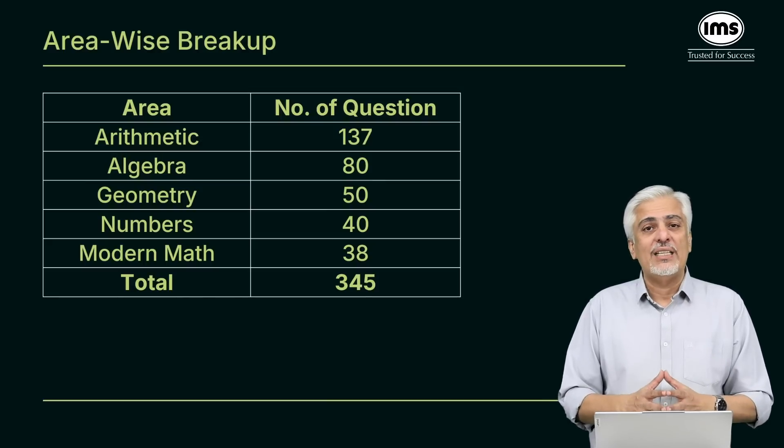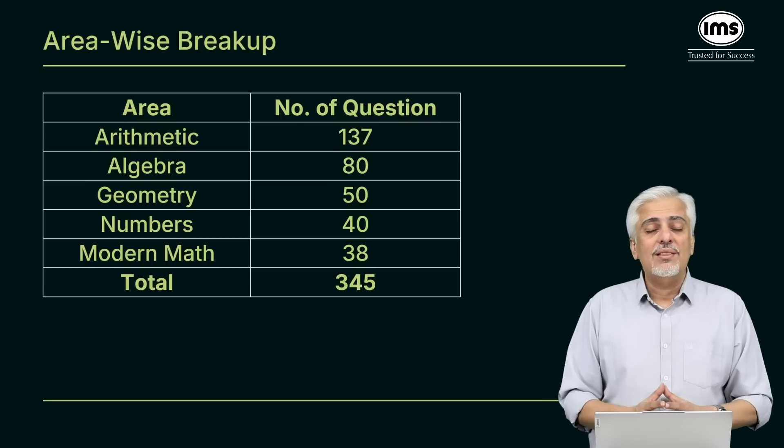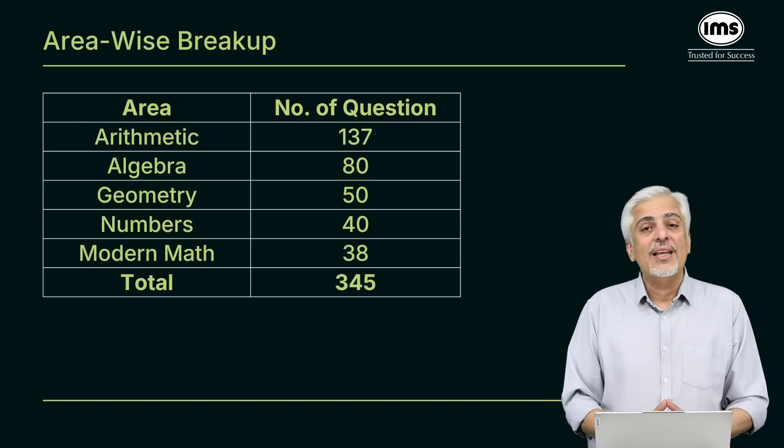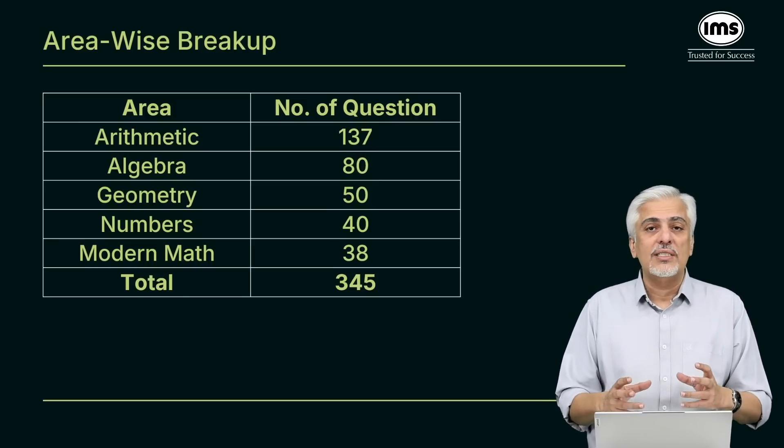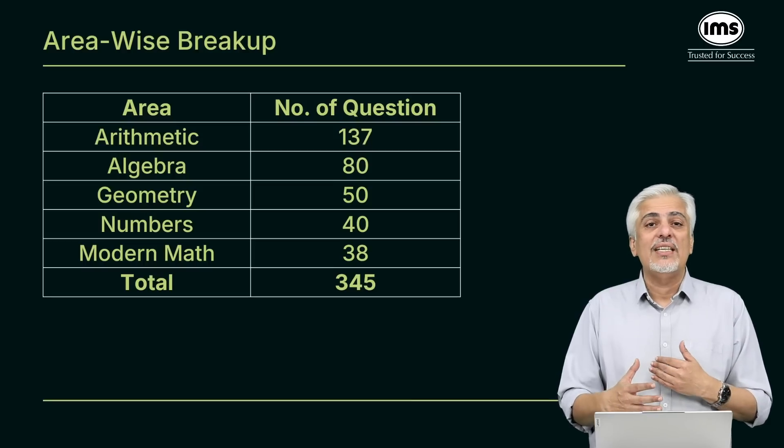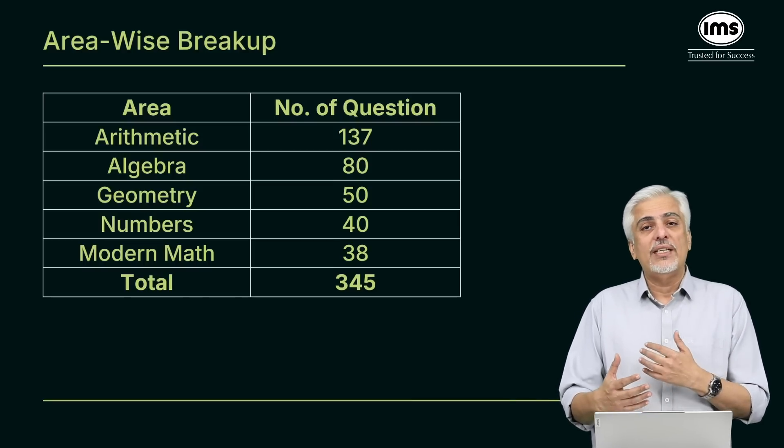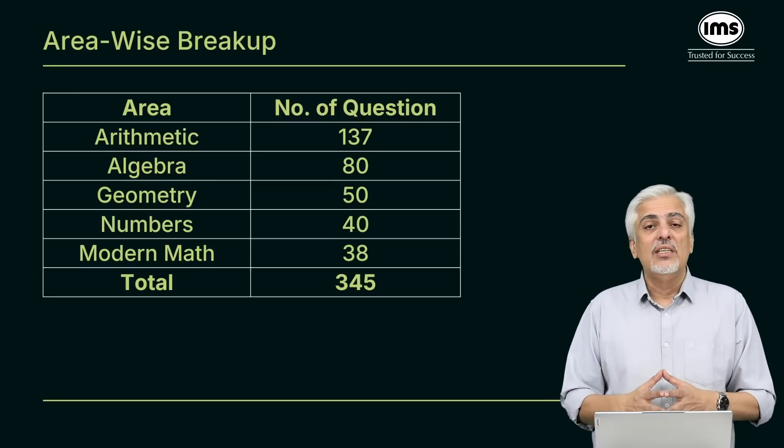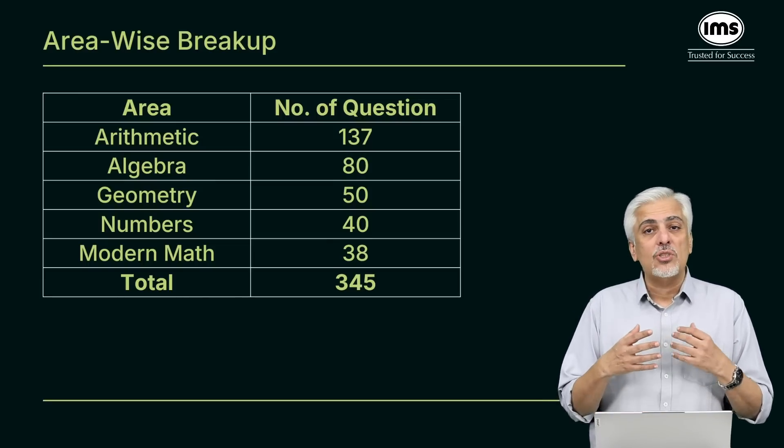Obviously, no surprise, arithmetic rules the roost. 137 questions from arithmetic, that is approximately more than one third, nearly close to 40% of the questions. Now arithmetic, not only because it's an important area but it's also one of the areas which is very vast. So when you look at the breakup of topics, you will realize yes, 137 questions from arithmetic but there are a lot of chapters also to revise for that.